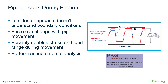The total load approach doesn't understand boundary conditions. For example, the magnitude of the friction force as the pipe returns to ambient conditions after an operating condition will be the same magnitude but in the reverse direction, and this could possibly double the stress and load range. The incremental analysis done in AutoPipe ensures that no extreme load is overlooked.